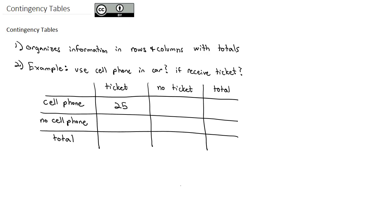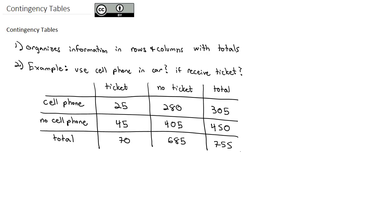There were 25 people who got a ticket and used a cell phone. There were 280 people who did not get a ticket and used a cell phone. Adding that up, we get 305 people total who used the cell phone. There were 45 people who got a ticket and did not use a cell phone. There were 405 people who did not get a ticket and did not use a cell phone, giving us 450 people total who used no cell phone. Adding the columns, we get 70 people who got a ticket, 685 people who got no ticket, and 755 people total in our sample space.